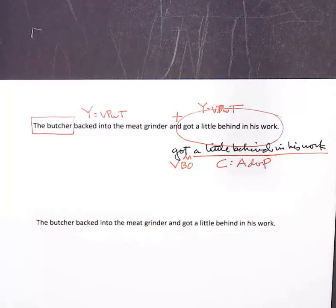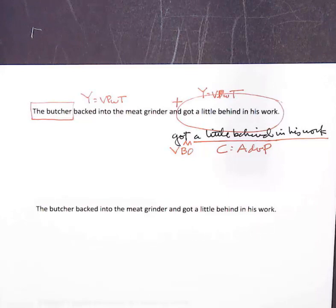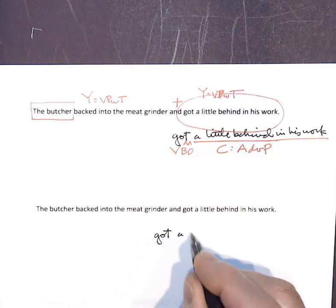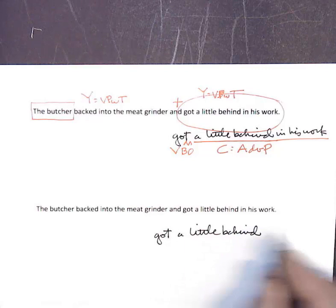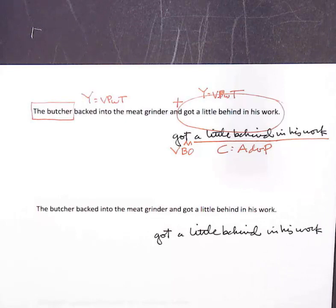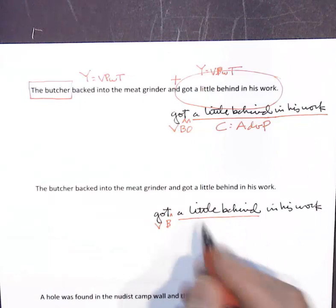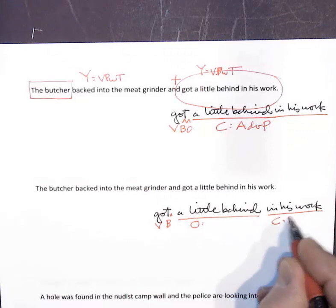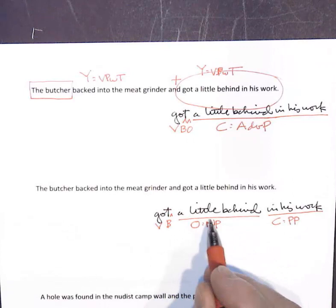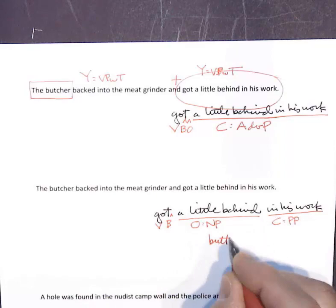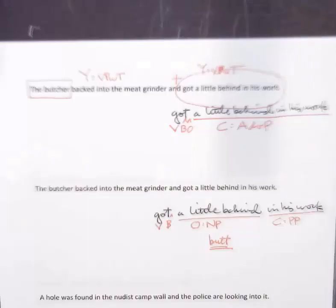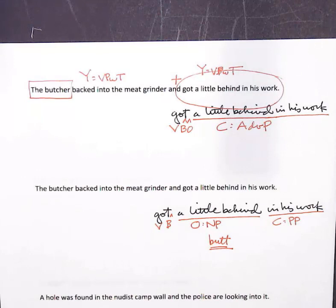In the second analysis, 'got' is the verb, there's no particle, but 'a little behind' is the object — a noun phrase — and 'in his work' is the complement — a prepositional phrase. When we think of 'a little behind' as a noun phrase, we're really thinking about his butt, meaning he backed into the machine and got that part of his body caught in it.